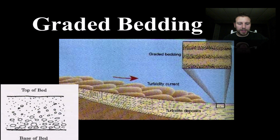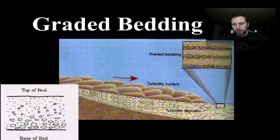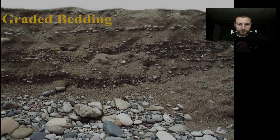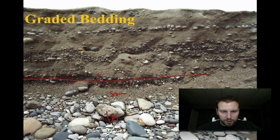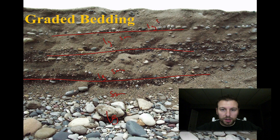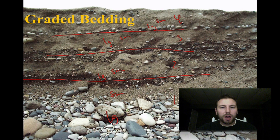Looking at graded bedding again: between the base and the top we see large particles at the bottom and small on top. This pattern repeats over a series of events — large then small, large then small. In this example we can see four series of events: one, two, three, four.